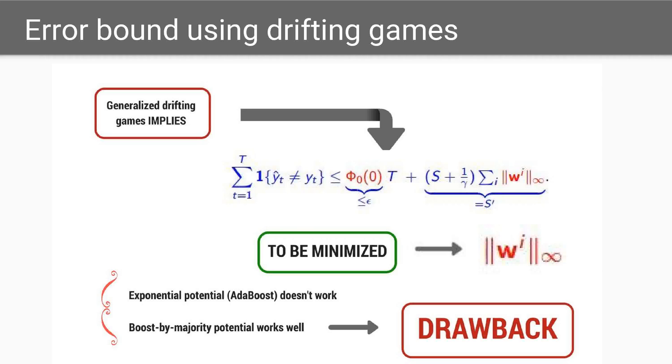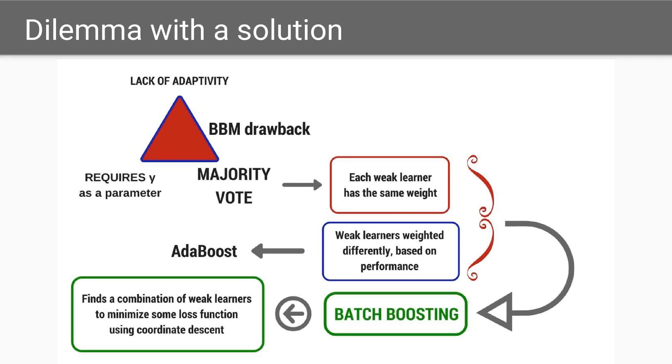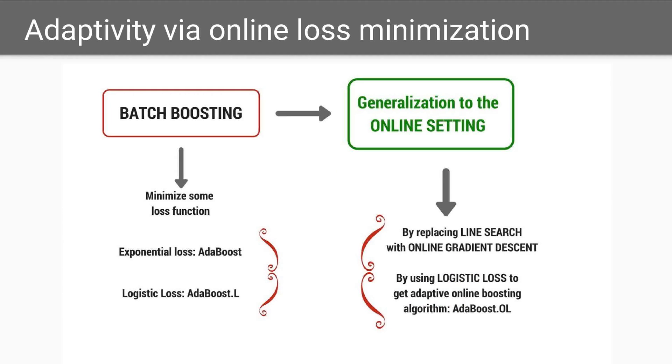Of the two proposed solutions, one does not work, and the other has problems. In the dilemma of whether or not to weigh weak learners evenly, batch boosting finds a combination of weak learners to minimize some loss function using coordinate descent. This solution allows the generalization of the batch boosting to the online setting, obtaining with it the algorithm AdaBoost.